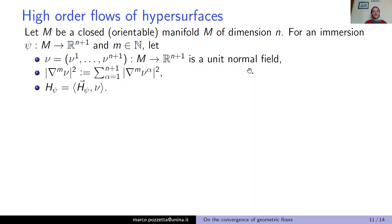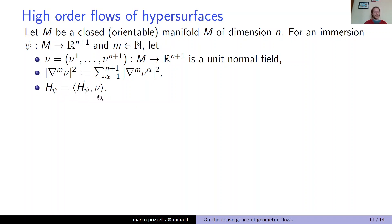We will need the squared norm of the m-th covariant derivative of ν, defined as the sum over the components α of the squared norm of the m-th covariant derivative of the component ν^α — which is just a scalar function over M, so everything makes sense. We also need, to simplify notation, the scalar product between the mean curvature vector and the choice of ν, denoted simply by H of ψ — the mean curvature in direction ν.